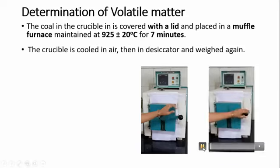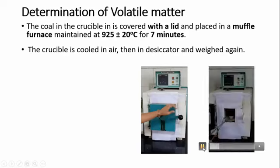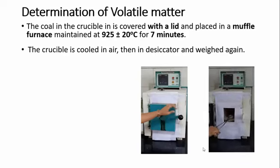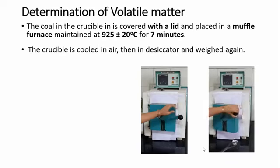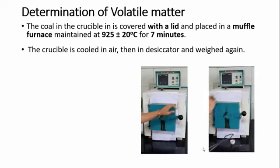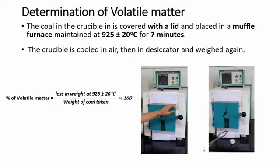After 7 minutes, the crucible is taken out from the muffle furnace, kept for cooling in open air for some time, then kept in the desiccator. The loss in weight is again calculated by the formula: loss in weight at 925 degrees Celsius upon weight of coal taken, into 100. By using this formula, we can calculate the percentage of volatile matter present in the fuel.